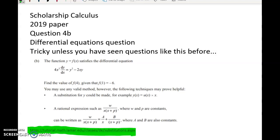Now, the scholarship question did give you some clues on this. It said the following techniques may prove helpful. A substitution for Y could be made, for example, this. But that clue, I think, is not going to be enough to get most of you through what you need to do with this question.